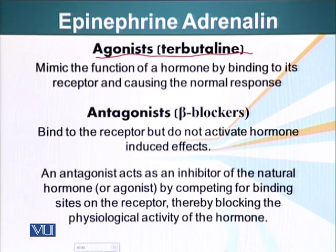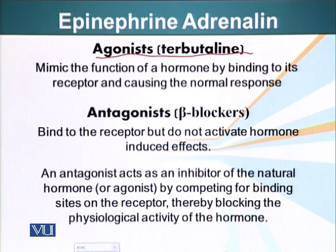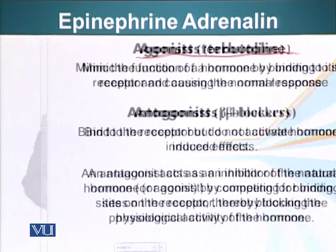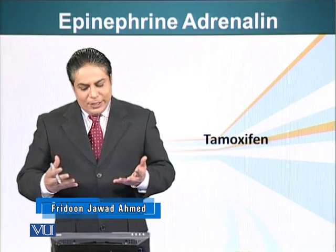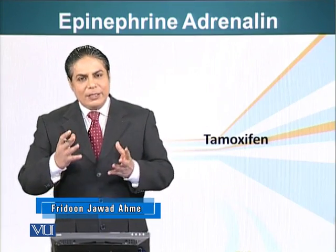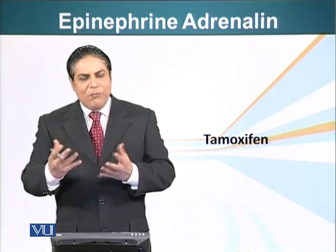Tamoxifen also acts as an agonist in uterine tissue. A lower dose is given to patients who have a fertility issue, where it mimics the effects of estrogen and causes the maturation of the uterus for implantation of an embryo. As an agonist for fertility purposes, the dose is generally 10 to 40 milligrams, whereas when acting as an antagonist it is much higher. This is a remarkable drug that acts as both agonist and antagonist in different tissues — demonstrating that the signaling system is one of the major targets for many pharmaceutical drugs.